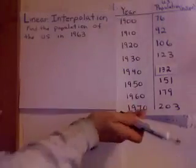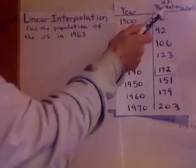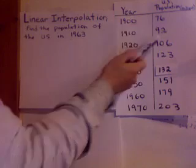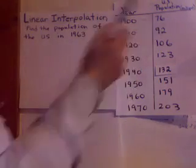Well, sometimes you have a chart of values. In this case, we have years in the U.S. and population in millions of the U.S. So in 1900, the population was approximately 76 million. In 1910, it was 92 million.